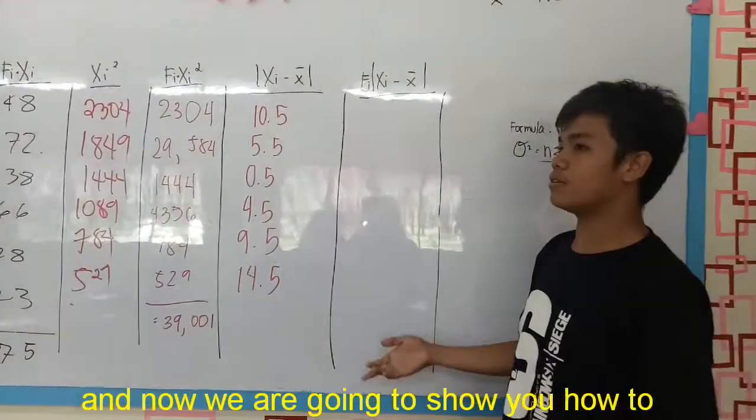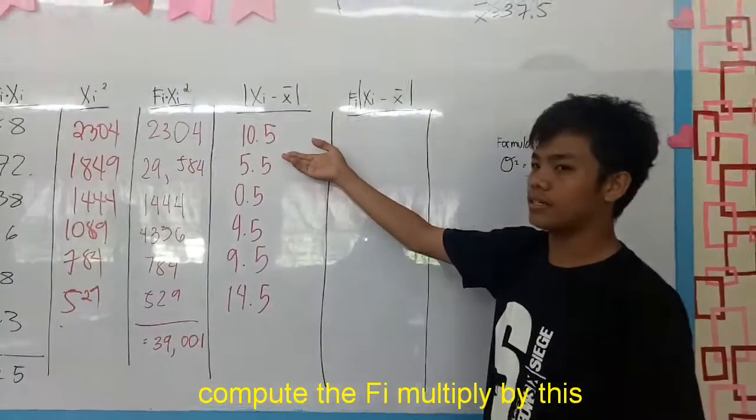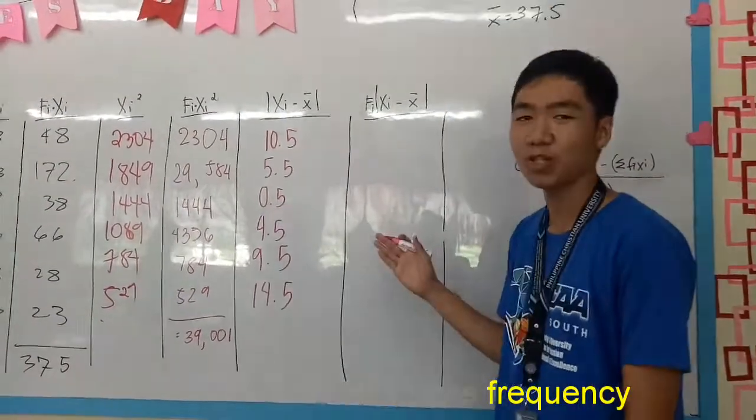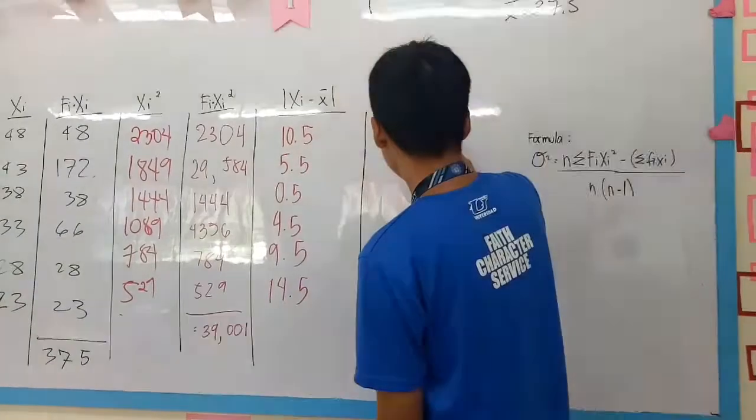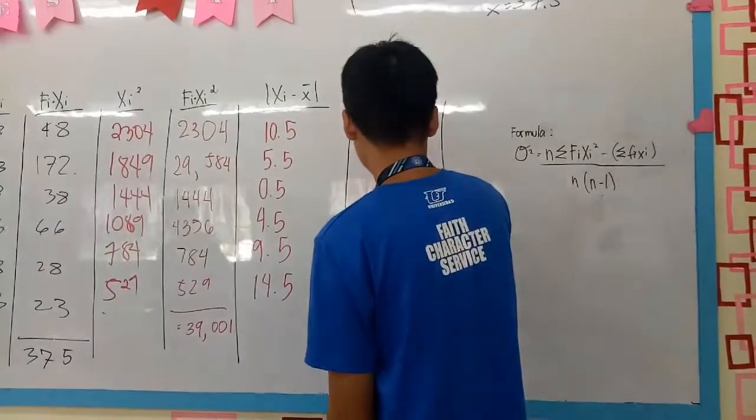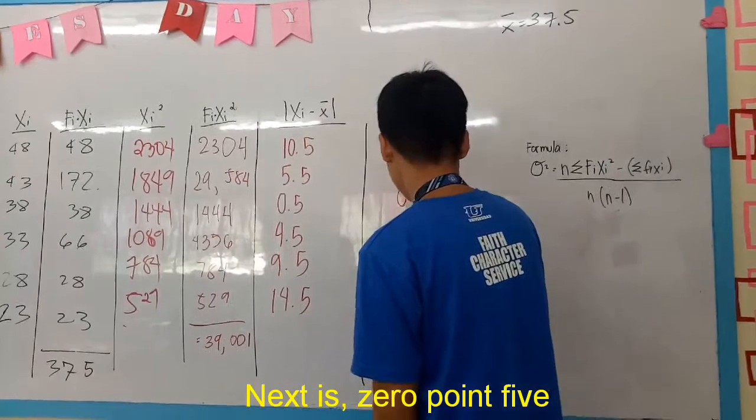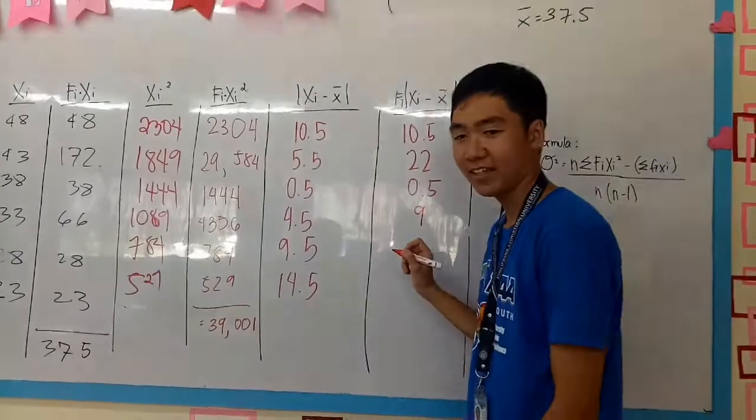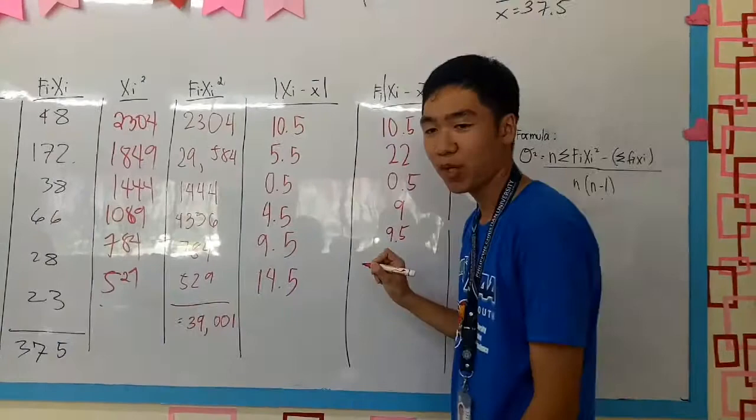And now we are going to show you how to multiply the frequency by this. For the answer here, we need to multiply the frequency by the absolute value of class mark minus mean. First, 1 times 10.5 is 10.5. Second, 4 times 5.5 is 22. Third, 1 times 0.5 is 0.5. Fourth is 2 times 4.5 is 9. Fifth is 1 times 9.5 is 9.5. And the last is 1 times 14.5 is 14.5.